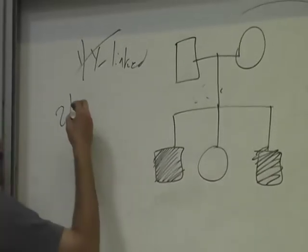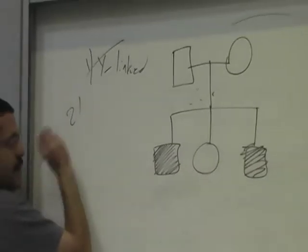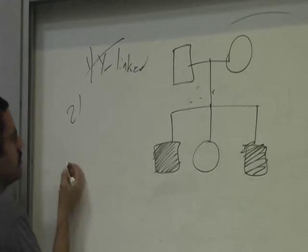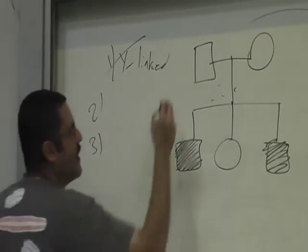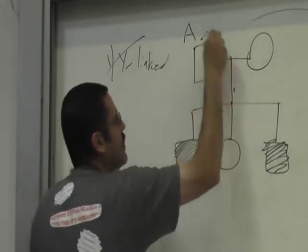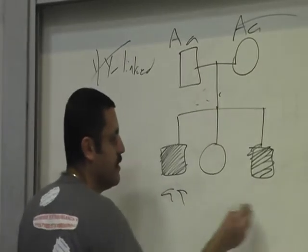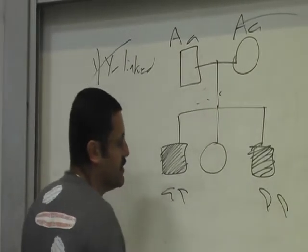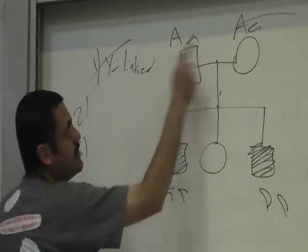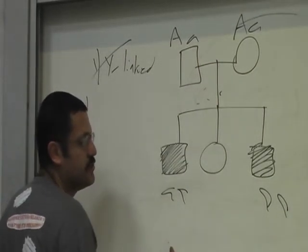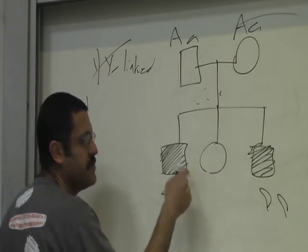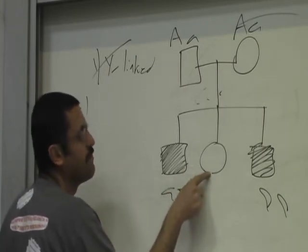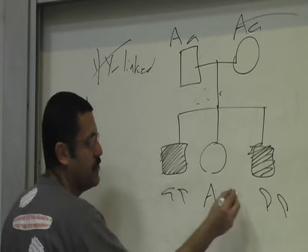So you've ruled out autosomal dominant in one swoop. Can it be autosomal recessive? It can't be dominant — this guy has to have a big A, but his parents don't have a big A to give him. Very quickly you can prove it: these two are carriers. They give their children the two little As. What's the genotype for this daughter? You can't tell.